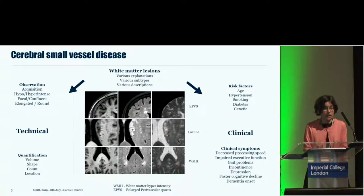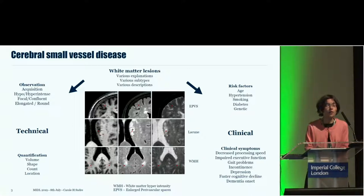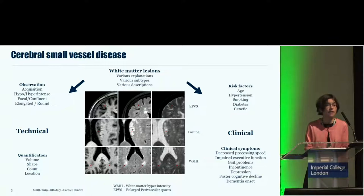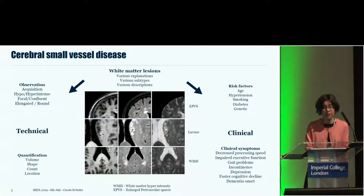What is cerebral small vessel disease? When your brain ages, vessels become stiffer and more occluded, and consequently the surrounding tissue supply is inadequate, leading to lesions. These lesions may be white matter hyper-intensity lesions, which are quite well-known, or enlarged perivascular spaces, lacunes, microbleeds, and so on. Here on this central picture, you can see three different acquisitions — T1, T2 FLAIR images — with three subtypes: EPVS, lacunes, and white matter hyper-intensity.